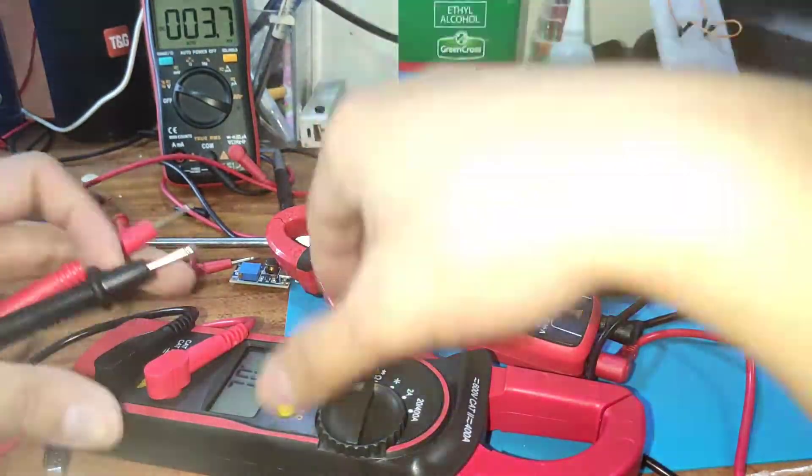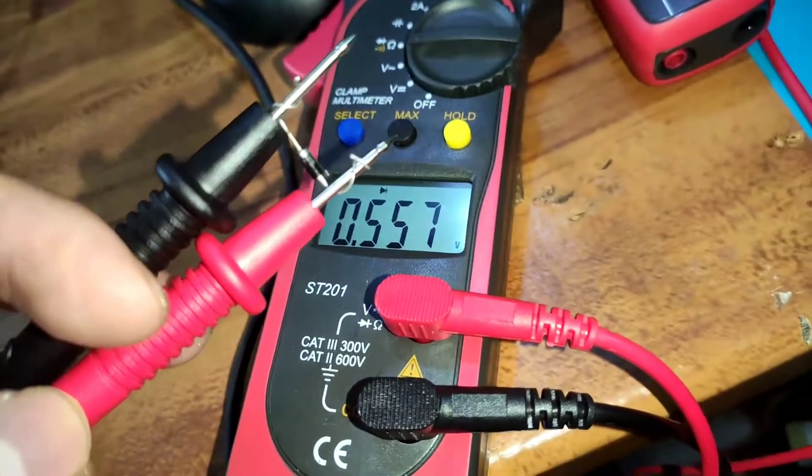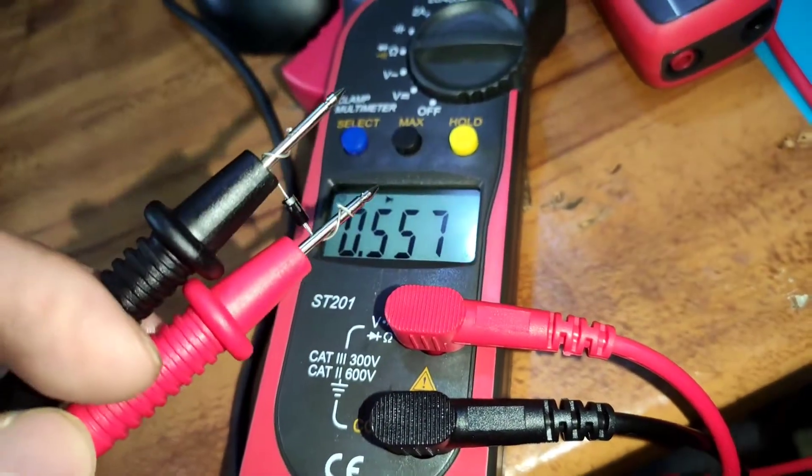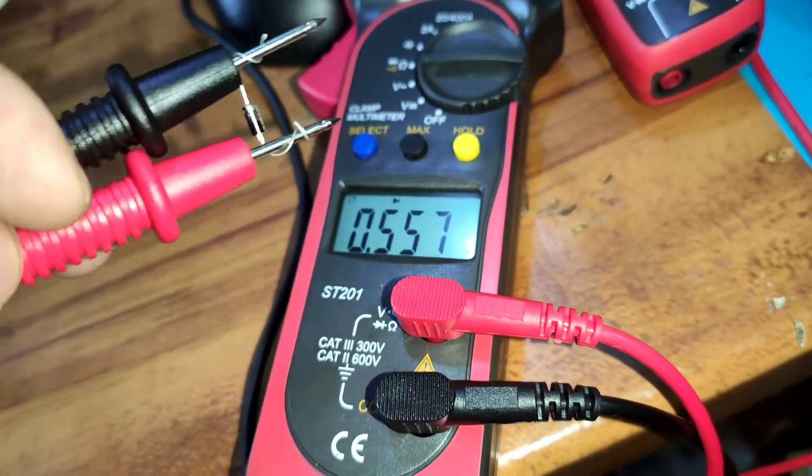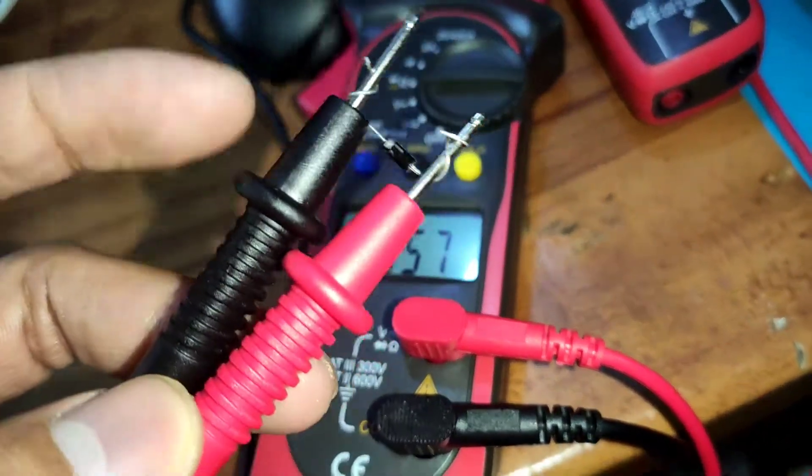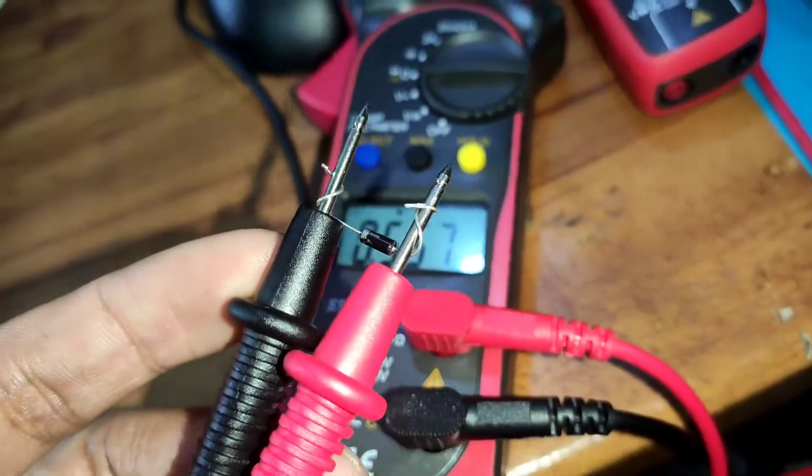We're going to try the diode test. So this is where the diode I've tested it. It's working. It's 0.5 volts. Although for the LEDs it's not working.